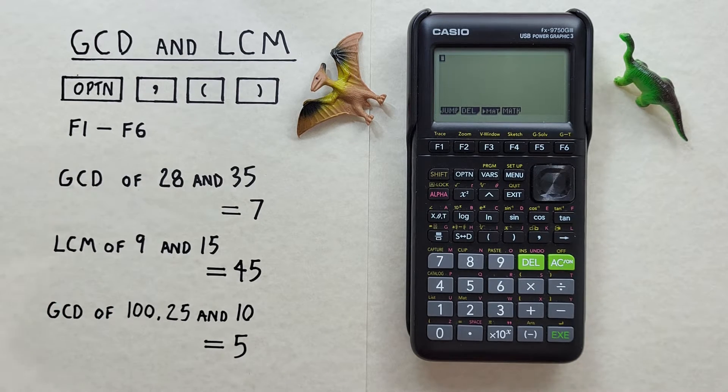Hello, and welcome to HD Calcs. I'm Rick, and in this video we're going to have a look at how we can find GCDs, or Greatest Common Divisors, and LCMs, or Least Common Multiples, on the Casio FX 9750 G3 calculator.